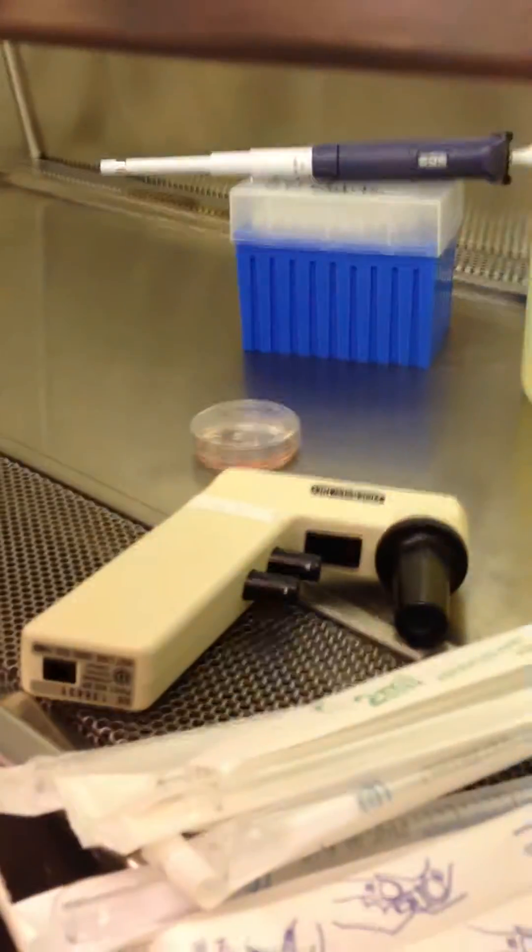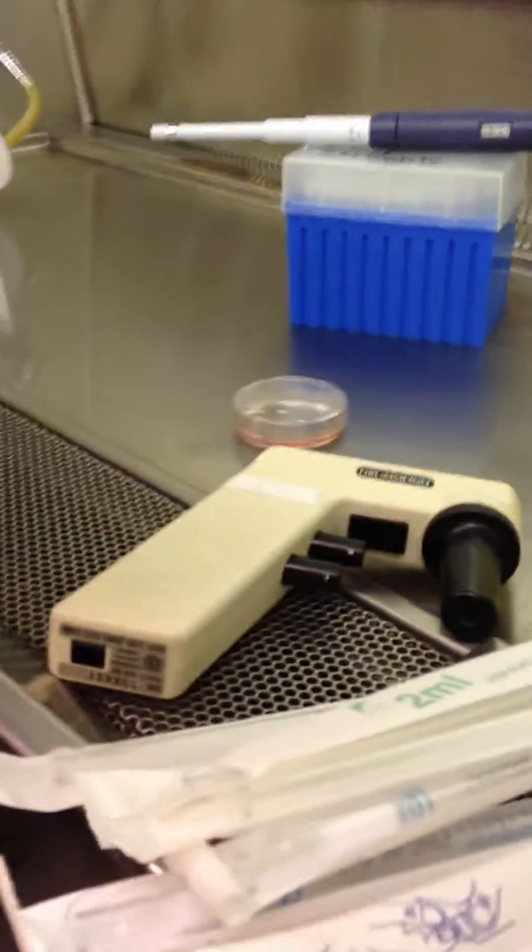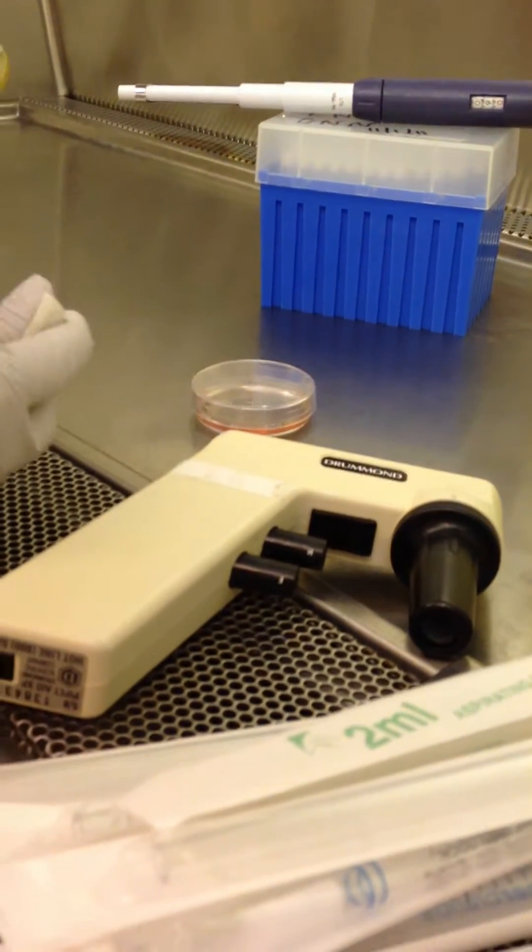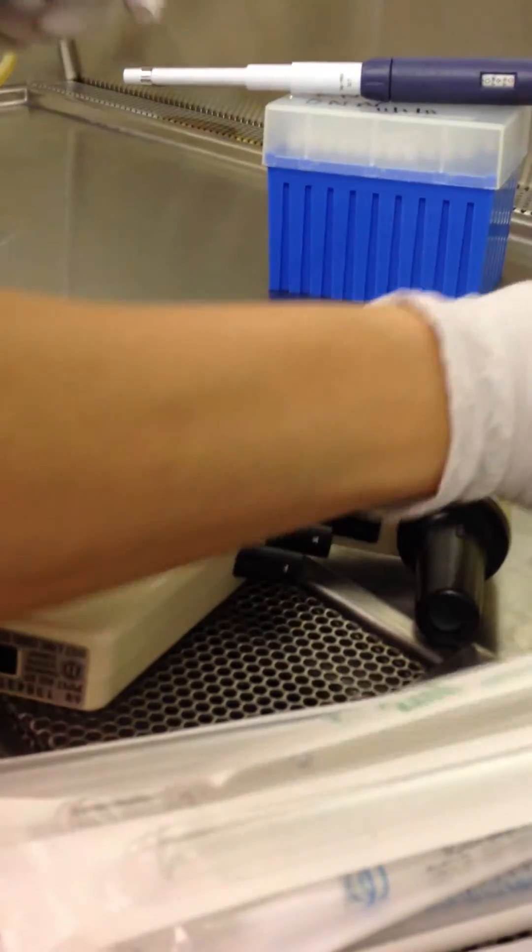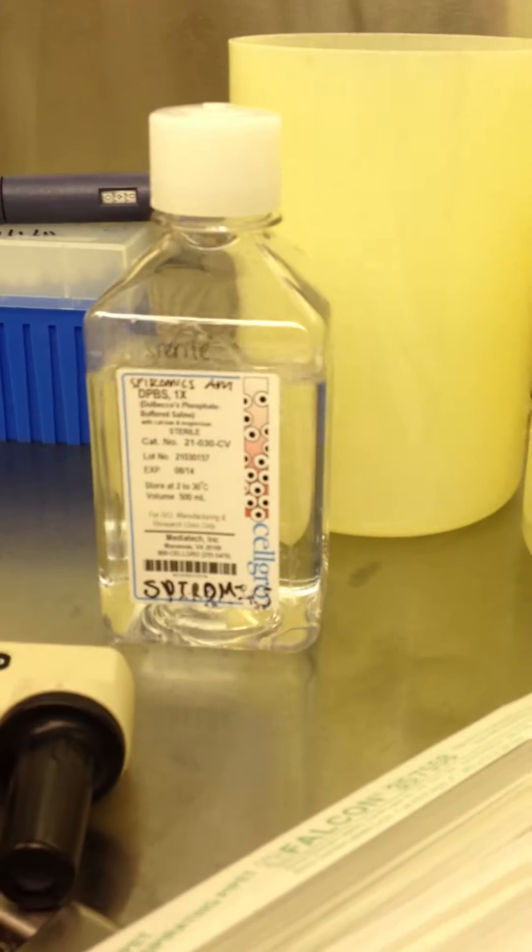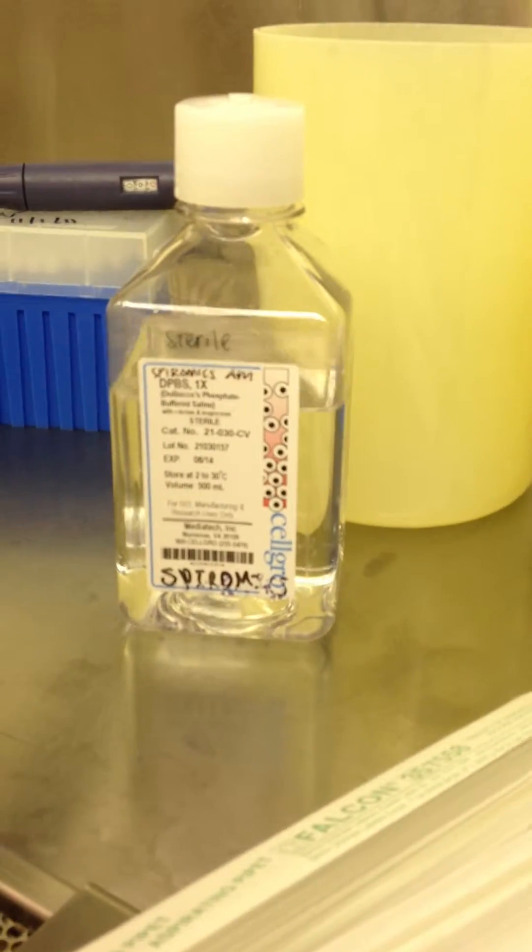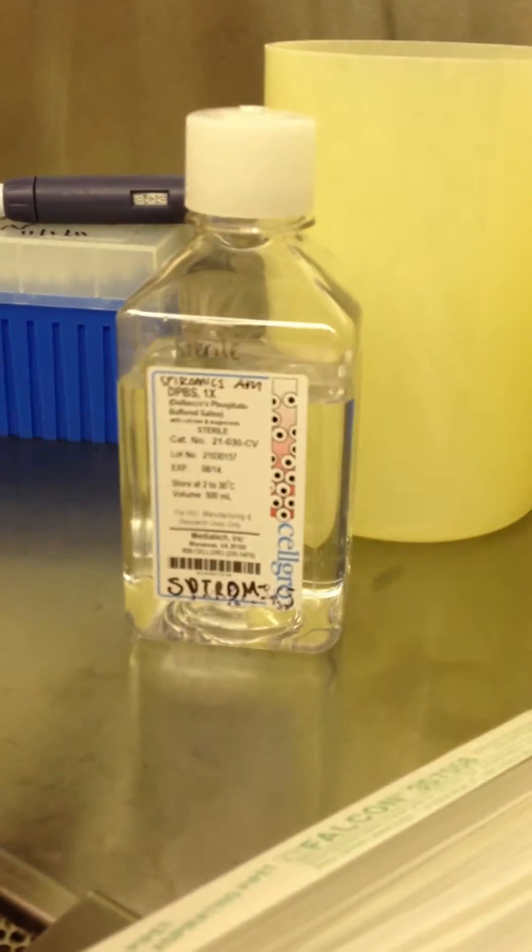So the first thing we're going to do is I'm going to tilt the plate and I'm going to aspirate out the media. And then I'm going to wash it with 5 mils of the PBS. This is the one that I'm using. It's just something that we had. And this is PBS with calcium and magnesium.